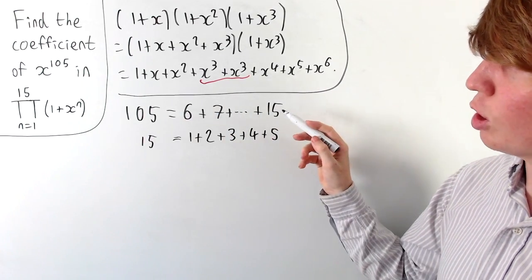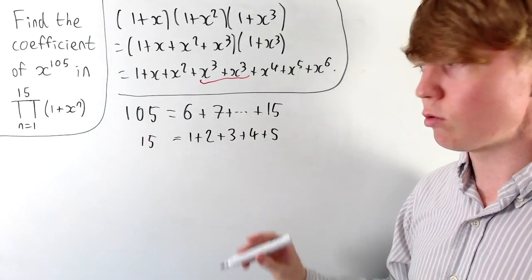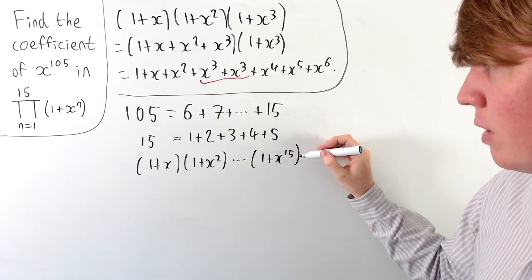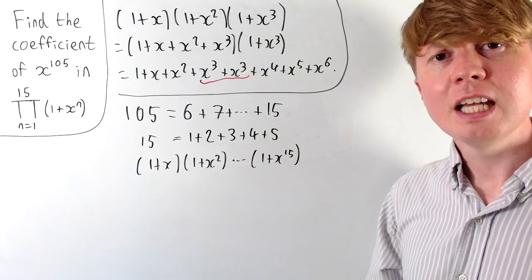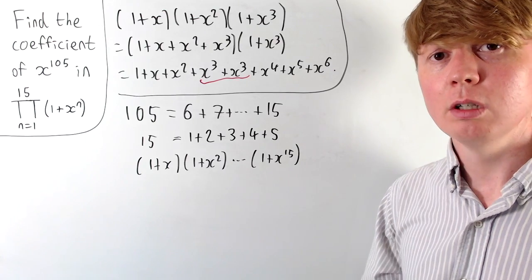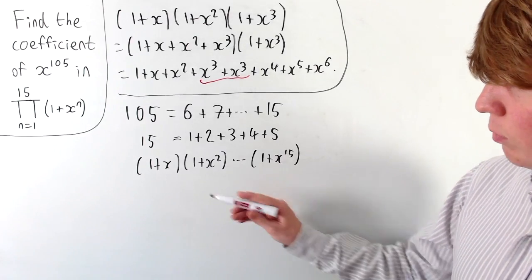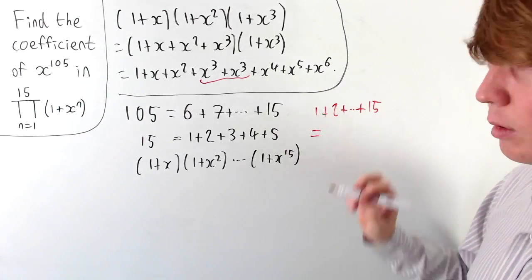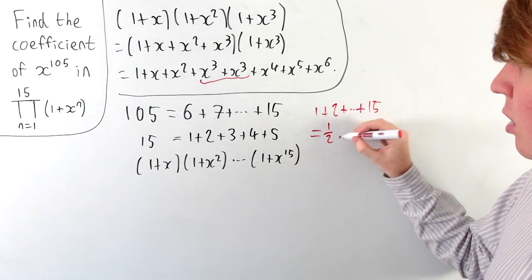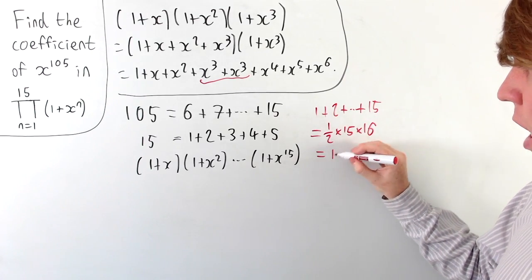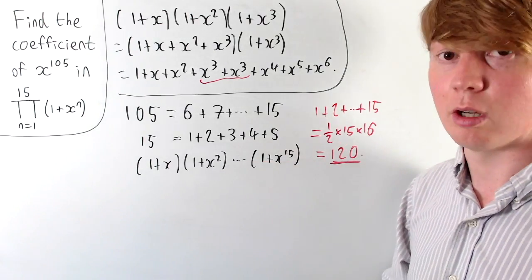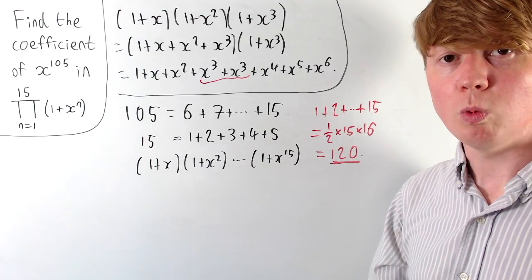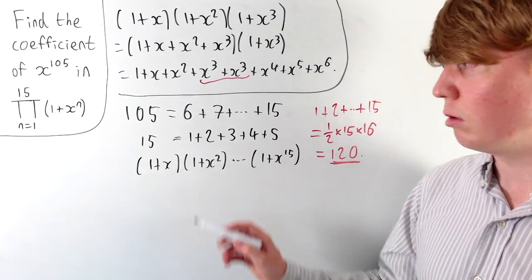If you make some choice of all the different powers of x that gives a sum of 105, let's think about the ones we haven't chosen. The sum of all remaining powers will be the same each time. The total sum of all different powers of x — 1 plus 2 plus all the way up to 15 — using the formula for the sum of integers from 1 to n, which is one half n times n plus 1, gives us one half times 15 times 16, so we get 120. So 120 is the total sum of all our different powers of x.